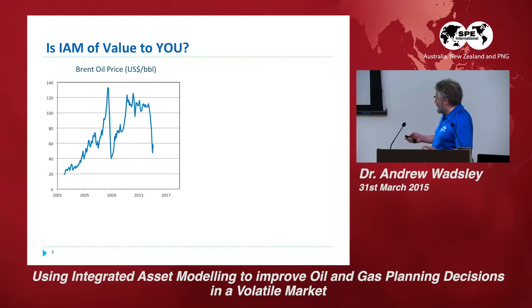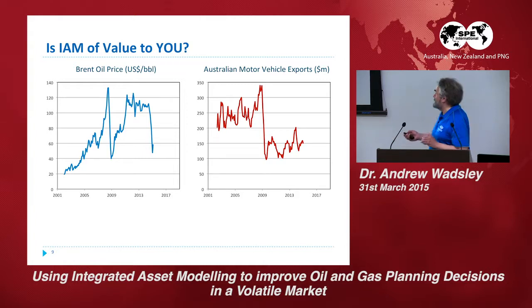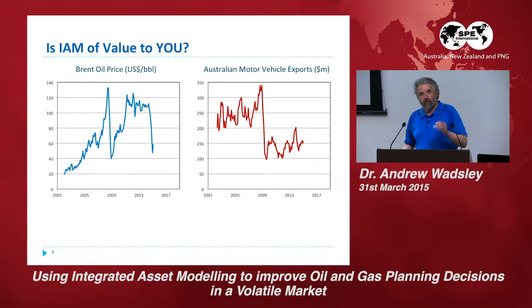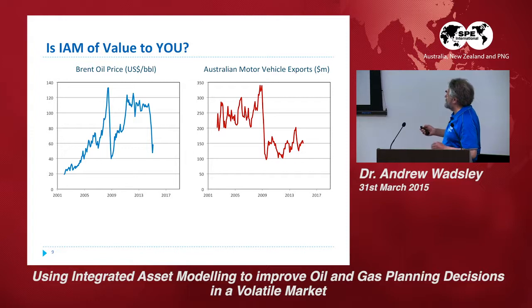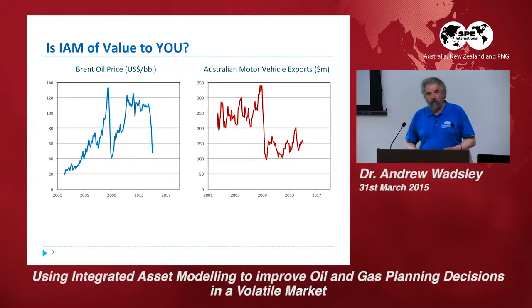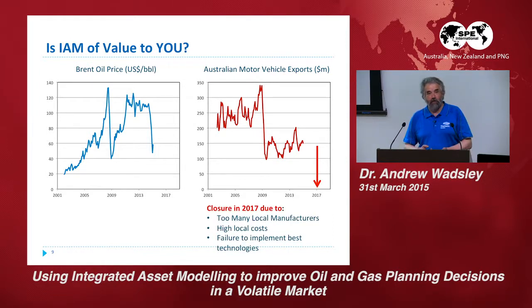Let's look at the Australian motor vehicle industry exports from 2002 — because 2002 was when that Volkswagen factory started operation. The Australian motor vehicle industry continued to grow quite rapidly, then the GFC dropped it right down, but it was still substantial growth. But we know what happened to the Australian motor vehicle industry: in 2017 it's going to shut down. Ford are leaving, General Motors are leaving, Toyota are leaving, Mitsubishi's already left.